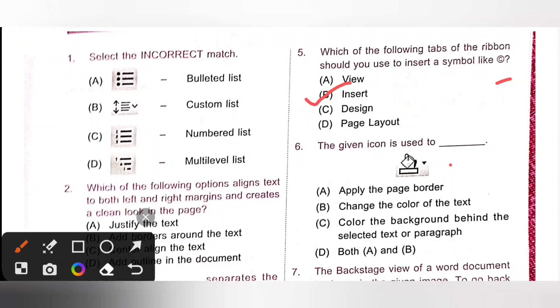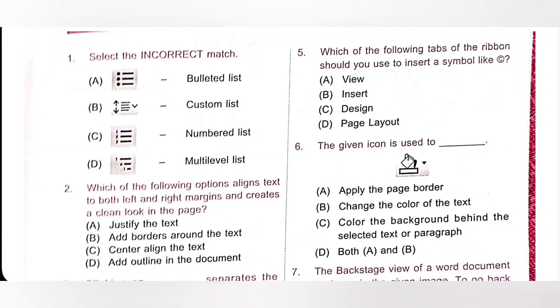Sixth one, the given icon is used to dash it. So the given icon is used to change the color of the background behind the selected text or paragraph. So option C is the correct answer. Actually it is a shading option, it is available in paragraph group of home tab. So it helps to change the background color of selected text. So option C.